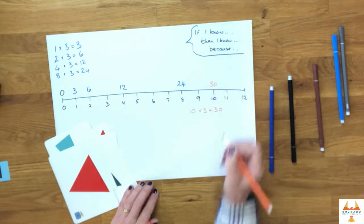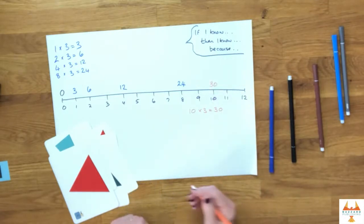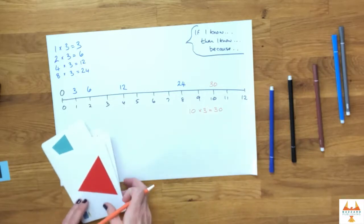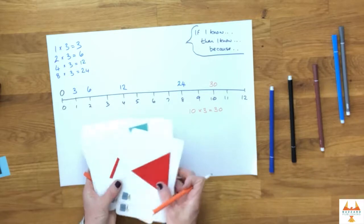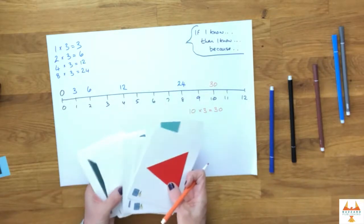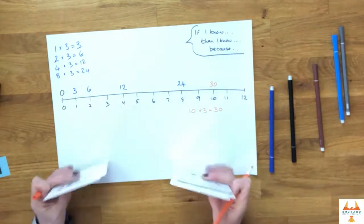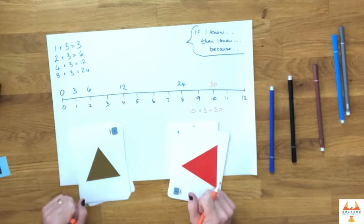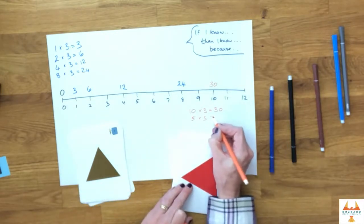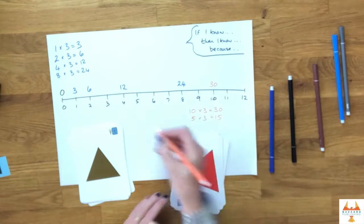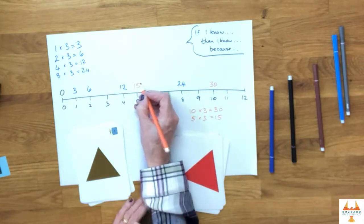So that gives us that fact there. Now instead of using doubling, I can use halving. If I had 10 triangles giving me 30 sides, if I halve my number of triangles, I've now got five triangles, which means altogether I've got 15 sides. So this one can go in here.